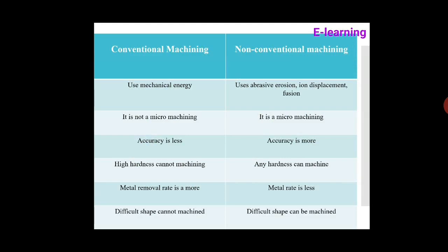Non-conventional machining processes can be used for any hardness of material. Conventional machining has a higher material removal rate (MRR), but in the case of non-conventional machining, the MRR is less than that of conventional machining.